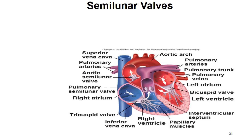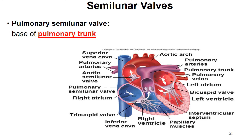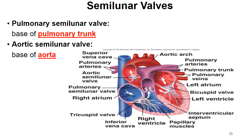The semilunar valves: the pulmonary semilunar valve is at the base of the pulmonary trunk, directing blood to the lungs. The aortic semilunar valve is at the base of the aorta. At each major junction in the heart there is a valve regulating blood flow. Notably, all four valves are not open at the same time — they open in pairs. When the two AV valves are open, the semilunars are closed; when the semilunars are open, the AV valves are closed.